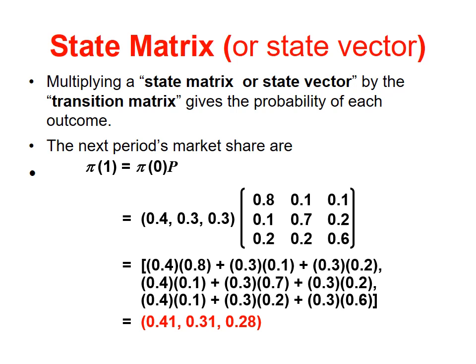To compute the new American Food market share: the first number in vector 0, 0.4, is multiplied by the first number in the first column, 0.8; plus the second number in vector 0 times the second number in the first column; plus the third number in vector 0 times the third number in the first column. This result represents the new American Food market share.